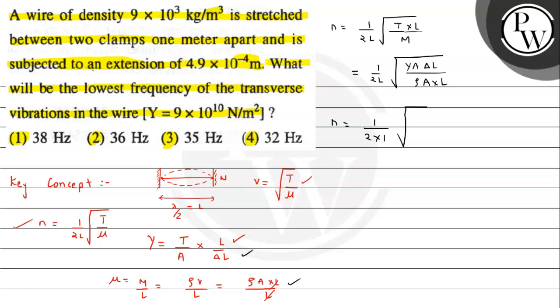Now just substitute values to get the final answer. We have 1 meter length given × √(Y, which is 9 × 10¹⁰, × ΔL which is 4.9 × 10⁻⁴, divided by density which is 9 × 10³ × length which is 1). The 9s can cancel.